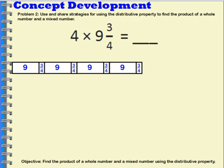Then I can multiply four times nine plus four times three-fourths. So when I multiply four times nine, that's thirty-six.